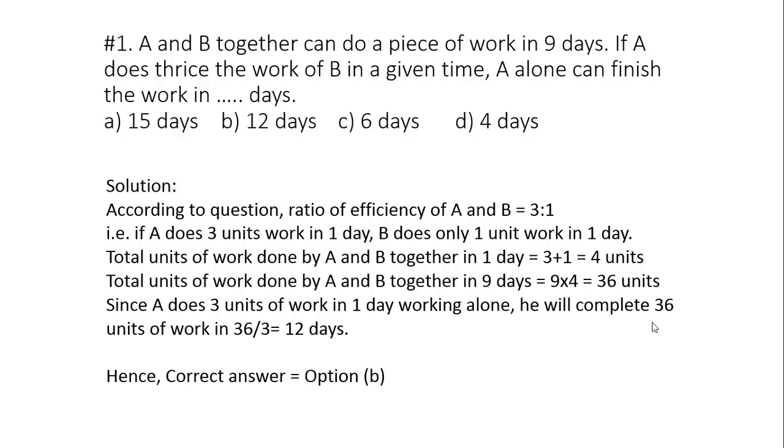Solution: As A can do thrice the work of B in a given time, it means the ratio of efficiency of A and B will be 3:1. That is, if A does three units of work in one day, B does only one unit of the work in one day. So total units of work done by A and B together in one day will be equal to 3 plus 1, that is 4.